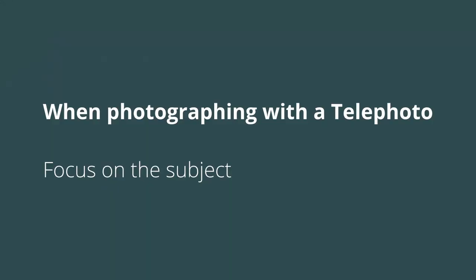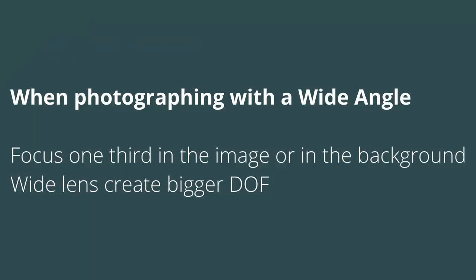The closer the focus point is to your camera, the smaller the depth of field becomes. When using a telephoto lens, focus exactly on the subject because the depth of field extends a little bit before and a little bit beyond the focus point. With a wide angle lens like 17mm, the depth of field is bigger, but don't focus too close to your camera or you'll end up with a smaller depth of field. How far the subject is from you also matters — even with a wide angle, if the subject is right in front of your camera, focus exactly on it.